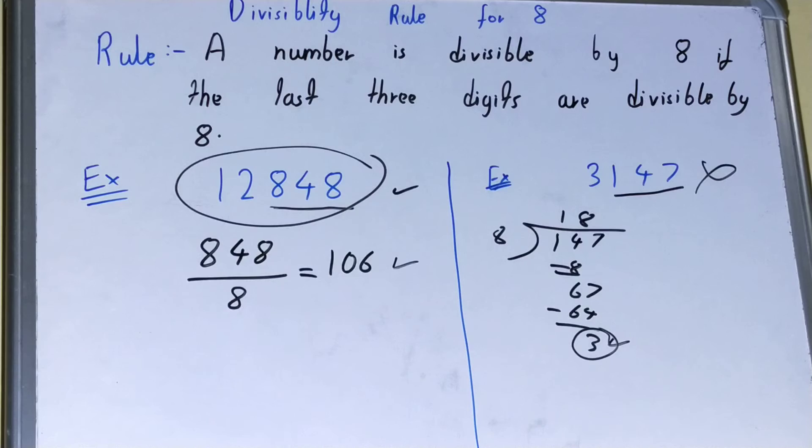When you divide and you get a remainder of zero, then you can consider that the whole number is also divisible by 8. So this was all about the divisibility rule for 8. If you like the video, please hit the like button, do subscribe, and thanks for watching.